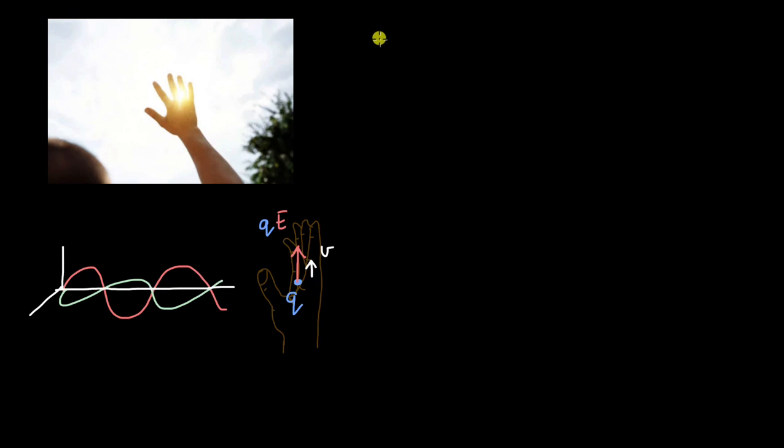Because force, the Lorentz force was after all, this was qV cross B. Here, when the electric field is upwards, we can see that the magnetic field will be pointing outside the plane of the screen.